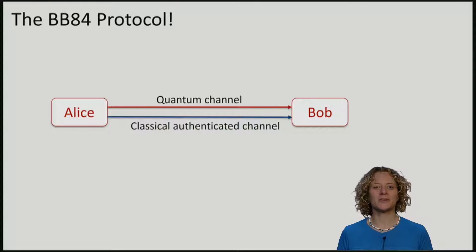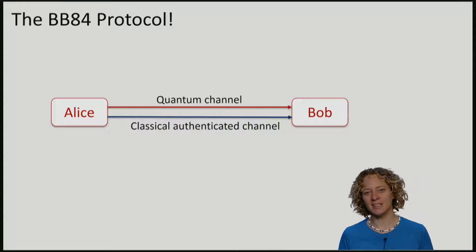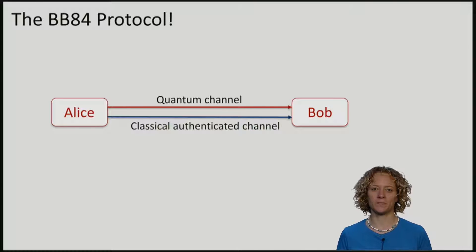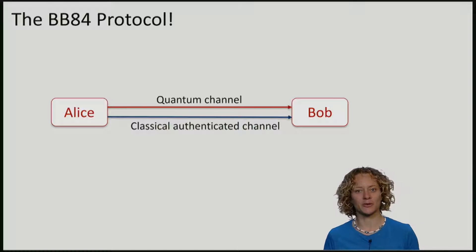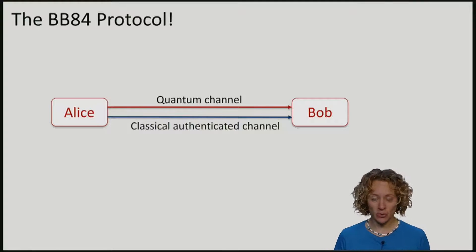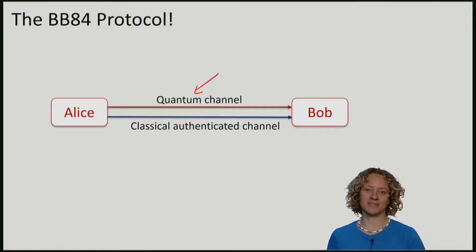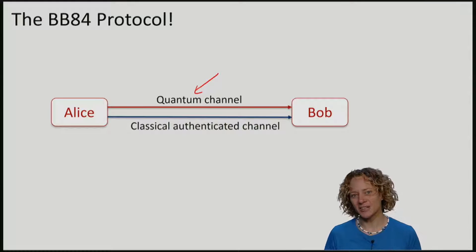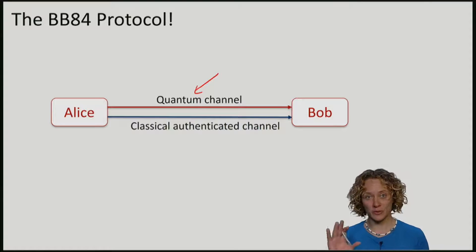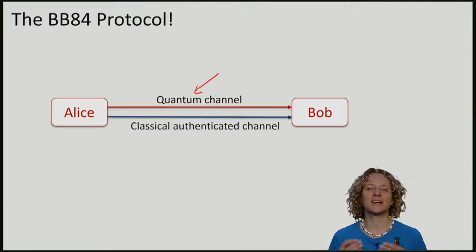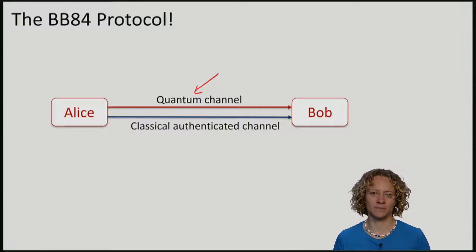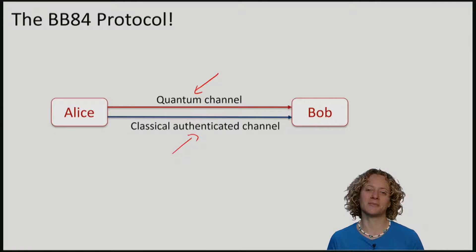You are now ready to see a quantum key distribution protocol, namely the famous BB84 protocol. To execute this protocol, Alice and Bob of course need a quantum channel to deliver qubits to each other. In addition, I will, for the moment, assume that they have a classical authenticated channel. In another lecture, you will see how they can make one.